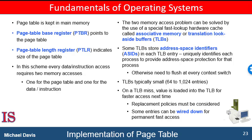If the page number is not in the TLB — known as a TLB miss — address translation proceeds following the earlier steps, where a memory reference to the page table must be made. When a frame number is obtained, we can use it to access memory. In addition, we add the page number and the frame number to the TLB so that it will be found quickly on the next reference. This is similar to the caching techniques you have already heard about.